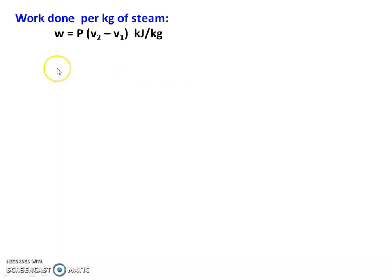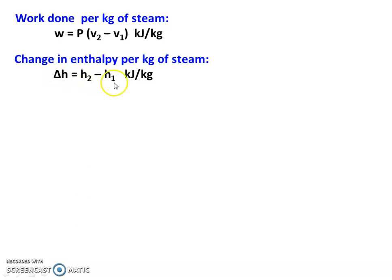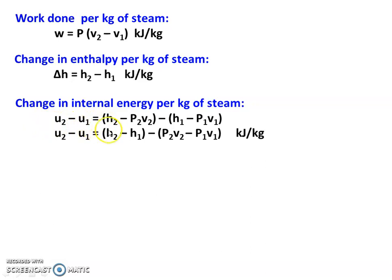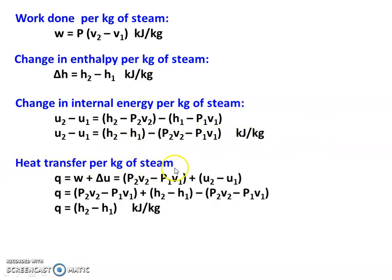The work done in the constant pressure process: W equals integral of P·dV, which equals P multiplied by (V2 minus V1) in kilojoules per kilogram. The change in enthalpy: delta H equals H2 minus H1 kilojoules per kilogram. The change in internal energy U2 minus U1, where U2 equals H2 minus P2·V2 and U1 equals H1 minus P1·V1. Rearranging, H2 minus H1 equals U2 minus U1 plus P·(V2 minus V1). The heat transfer Q equals W plus delta U, which simplifies to Q equals H2 minus H1 kilojoules per kilogram.